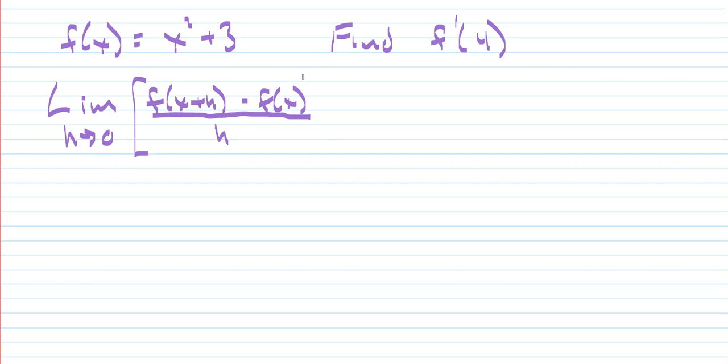And so we're going to do this definition piece by piece. So first of all, let's find f of x plus h. So f of x plus h is going to be equal to x plus h quantity squared plus 3. And now what we want to do is take f of x plus h and subtract f of x from it.